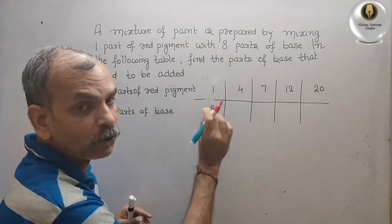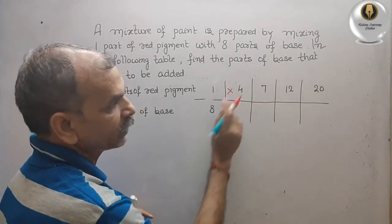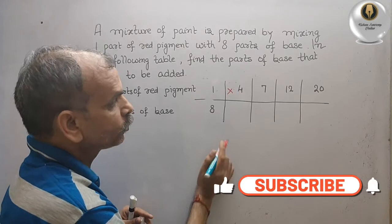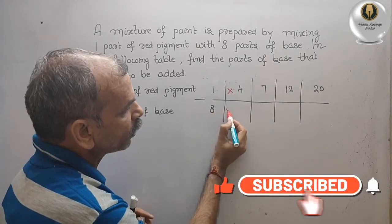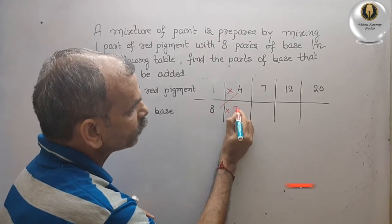1 to 4, that means you are multiplying by 4. So here also you will multiply by 4. That gives you 32.